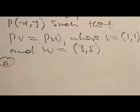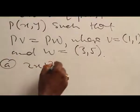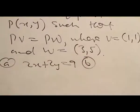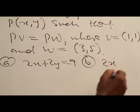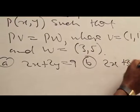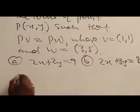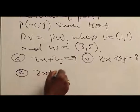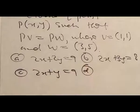Option A: 2x plus 2y equal to 9. Option B: 2x plus 3y equal to 8. Option C: 2x plus 1 equal to 9. And D: 1x plus 2y equal to 8.